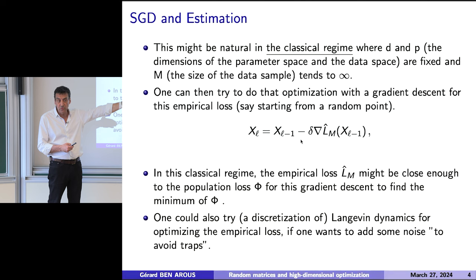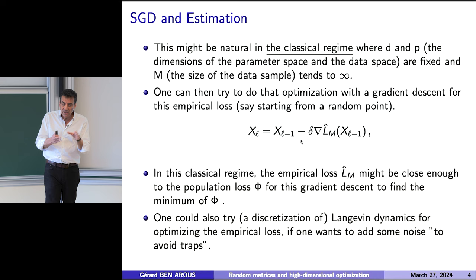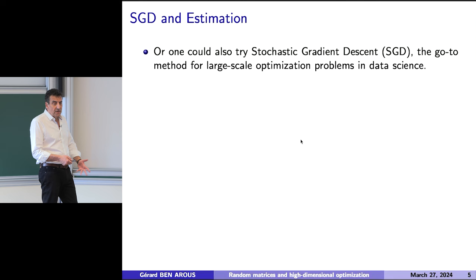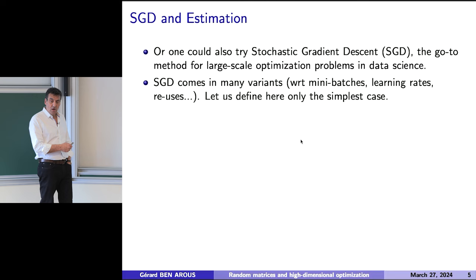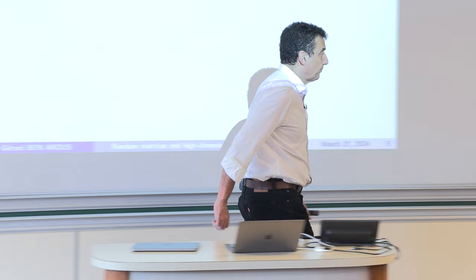Of course, you could do something else. You could try a discrete Langevin dynamics, which means adding some noise to avoid traps. In the different examples I've already mentioned, all these different variants have been studied, and they all do the same thing. But what you could also try is stochastic gradient descent, which is really the go-to method for those large-scale optimization problems. It comes in many variants with different mini-batches, different learning rates, reuses, all sorts of things. Here I define the simplest case, which will be online SGD.